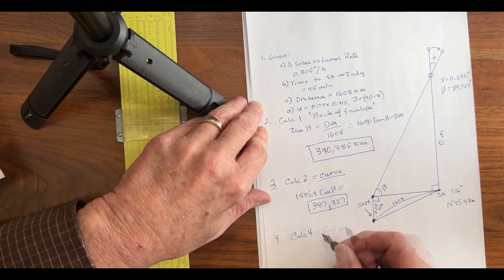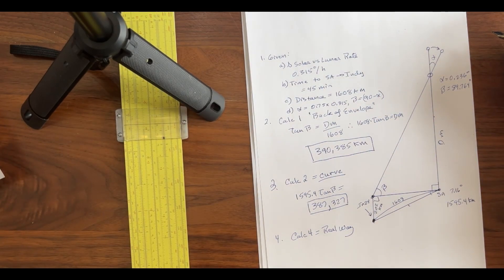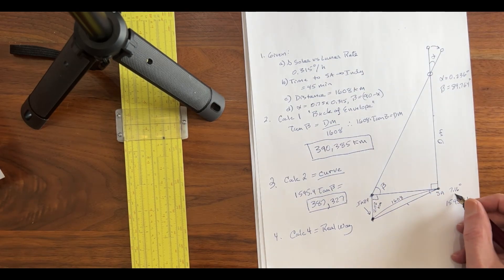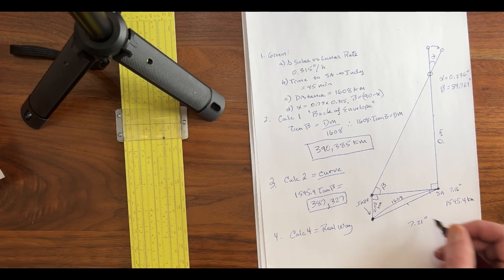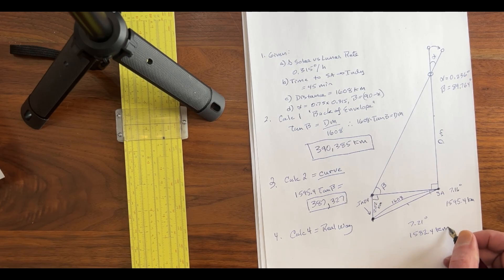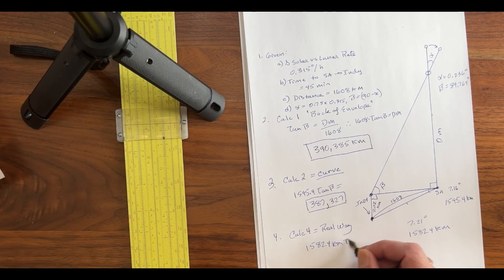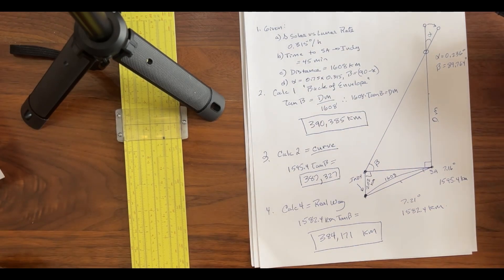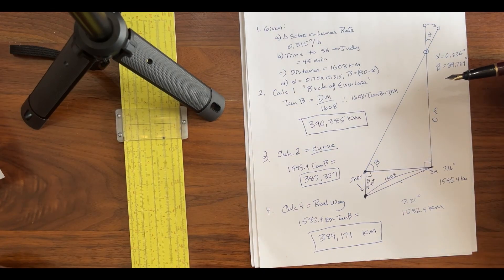How about calc 3? Do it the real way, using the chord length. Well, when we use the chord length, we find that this angle is now 7.21 degrees, and that distance is 1582.4 kilometers. So, we go 1582.4 kilometers tangent beta equals the distance to the moon. The actual distance to the moon to three significant digits is 384,000 kilometers. Nailed it!